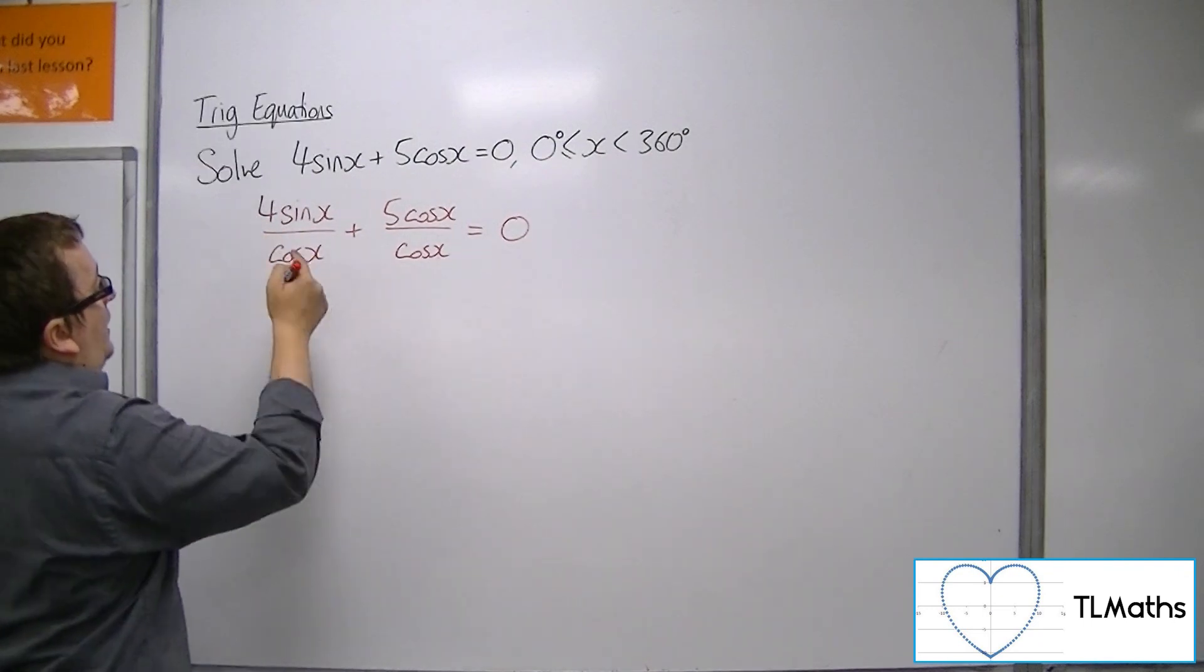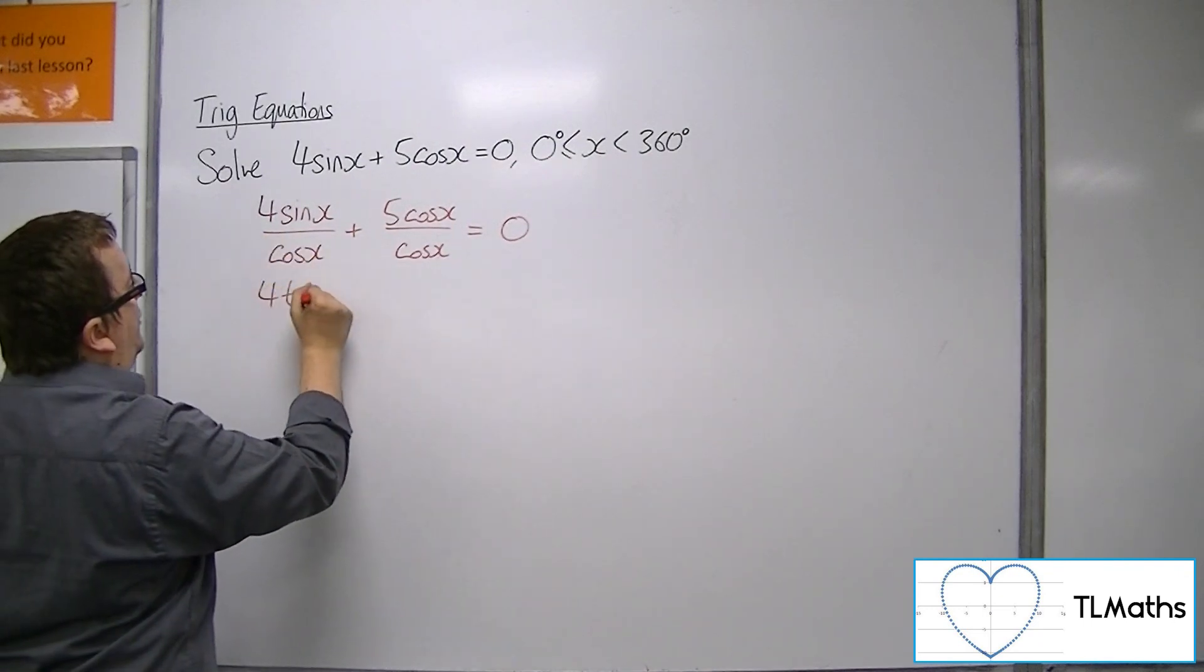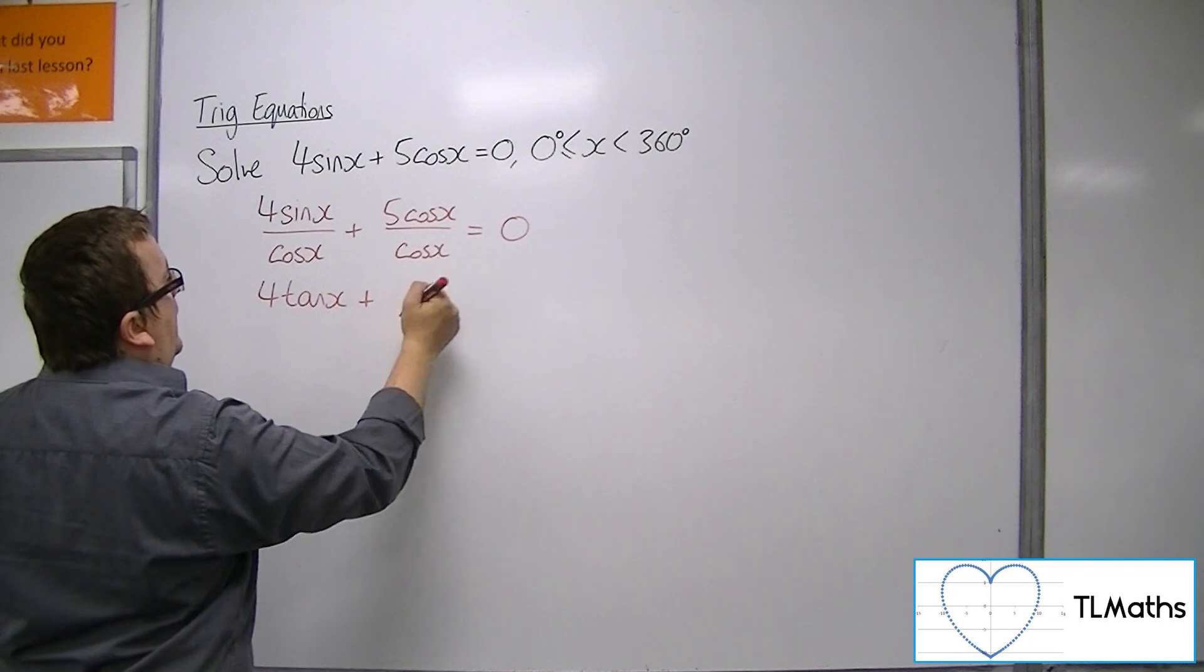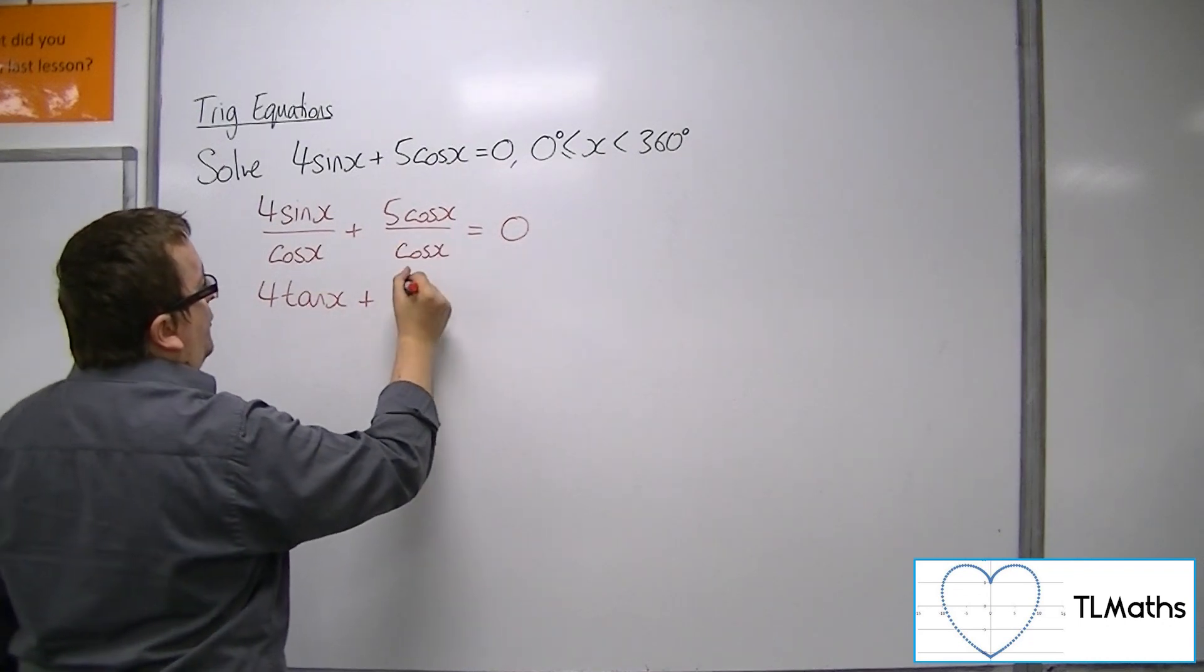So 4 sine x over cos x is 4 tan x, and 5 cos x over cos x is just 5.